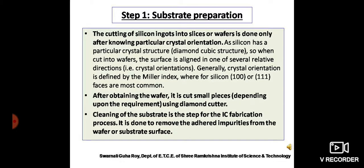The cutting of silicon ingots into slices or wafers is done by using a diamond cutter, and it is only done after knowing the particular crystal orientation. Silicon has a diamond cubic structure, so when cut into wafers, the surface is aligned to one of several relative directions — that is the crystal orientation. This is a very important point we always have to keep in mind.